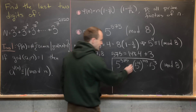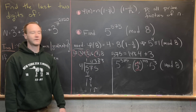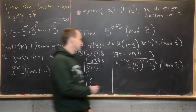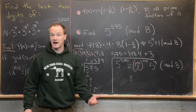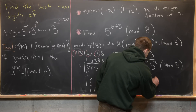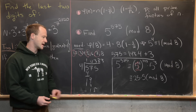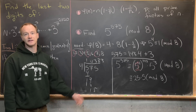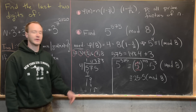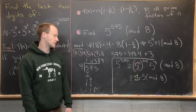By Euler's generalization, 5 to the 4 is congruent to 1 mod 8, so that term becomes 1 to the 143, which is just 1. All we have left is 5 cubed, which equals 5 squared times 5, or 25 times 5 mod 8. Since 25 is congruent to 1 mod 8 — it's 1 more than 24 — the result is 5 mod 8.